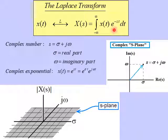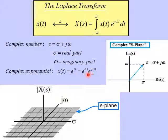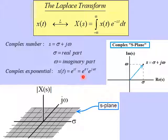In the Laplace Transform integral, s appears in the exponent of e to the minus st. We can think of e to the st by breaking up s as sigma plus j omega. The part e to the j omega t is just an oscillating function, as shown using Euler's formula. The other part — the real part of s, sigma — shows up as e to the sigma t, which can either be an increasing or a decreasing exponential with time.